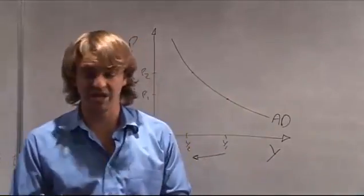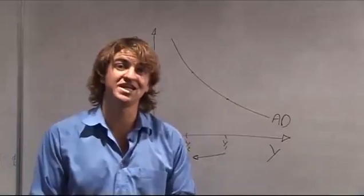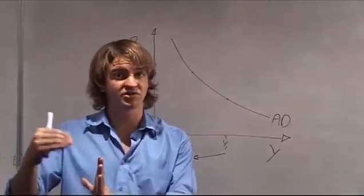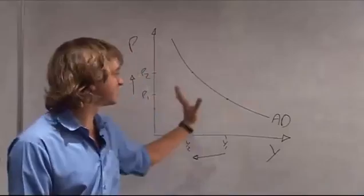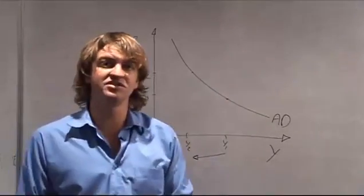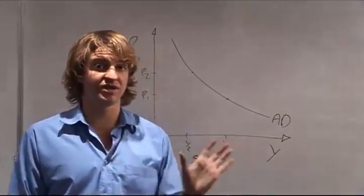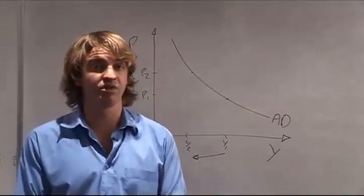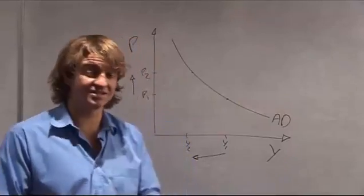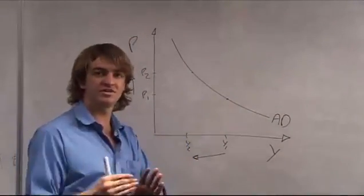Consumption is made up of wealth effects, expectations, household debts, and taxes — the changes in the consumption function we've gone through. Any of those changes will shift your aggregate demand curve either to the right or to the left. Changes in investment will also shift it right or left. Those factors include the real interest rate, expectations, technology, and business taxes — the factors that shift the investment demand schedule.